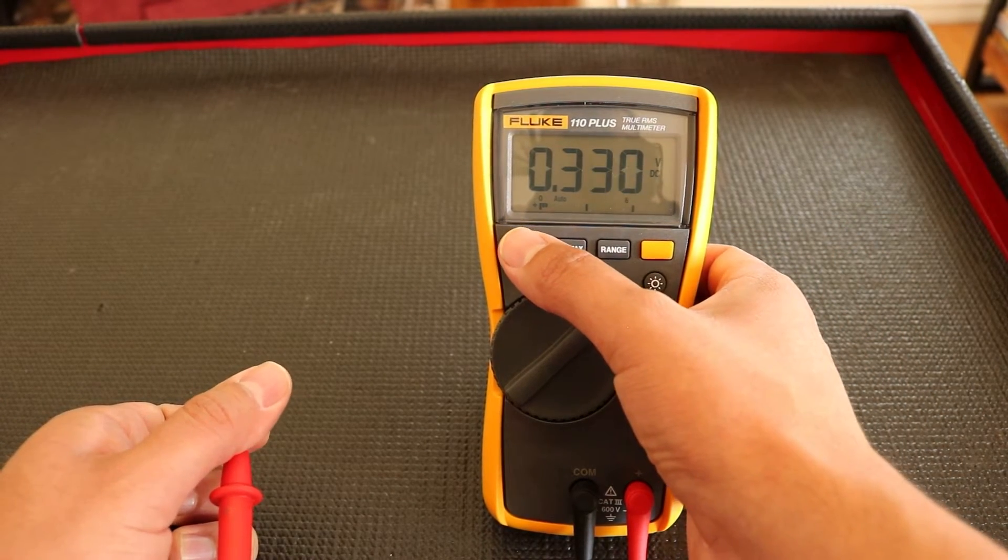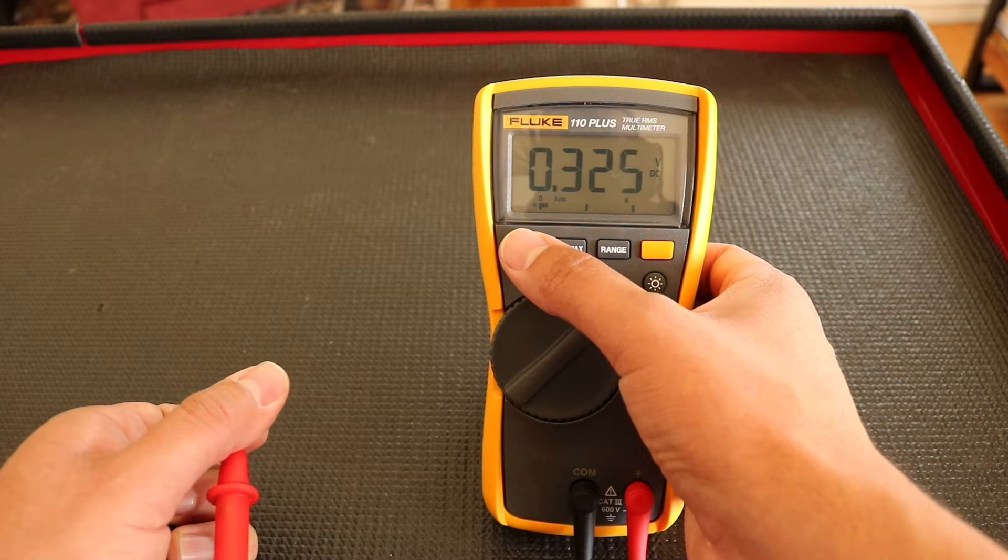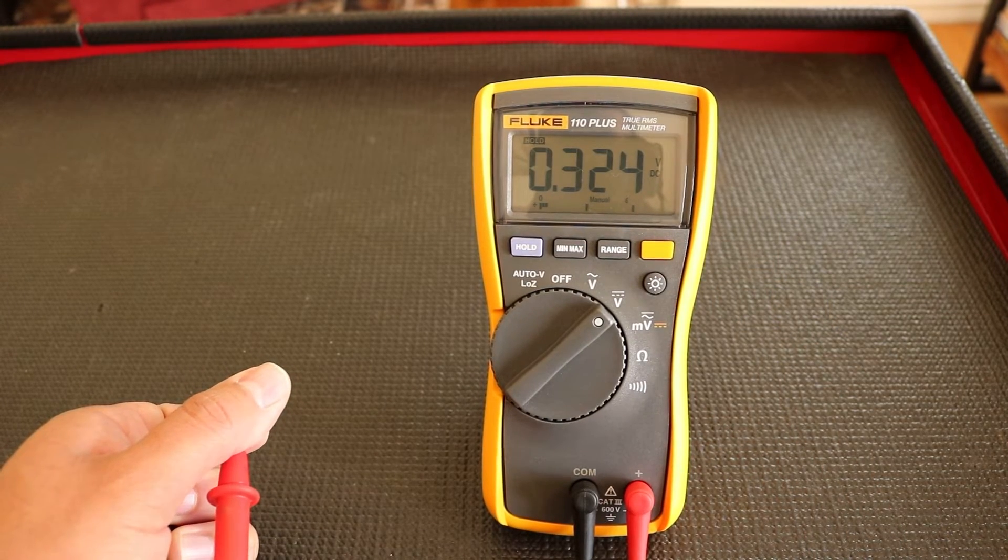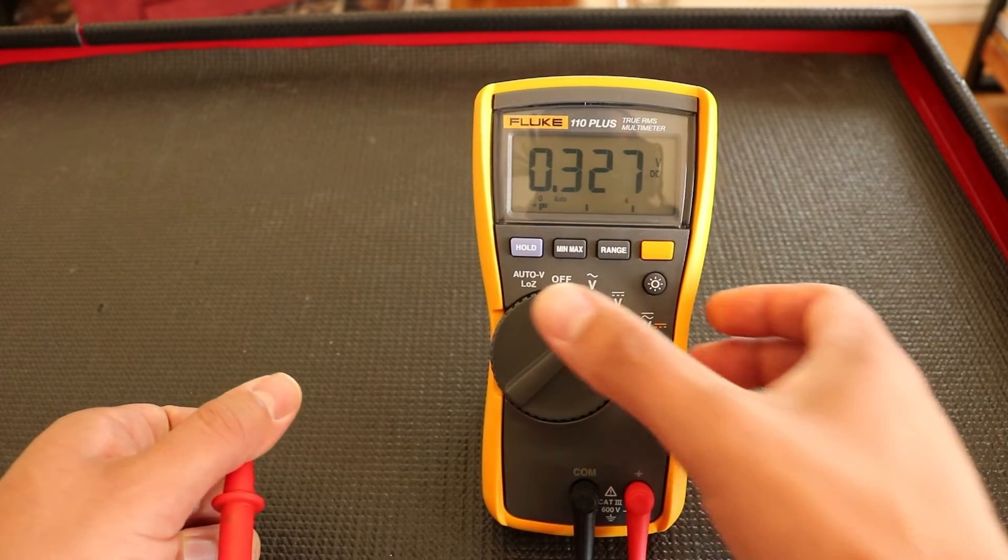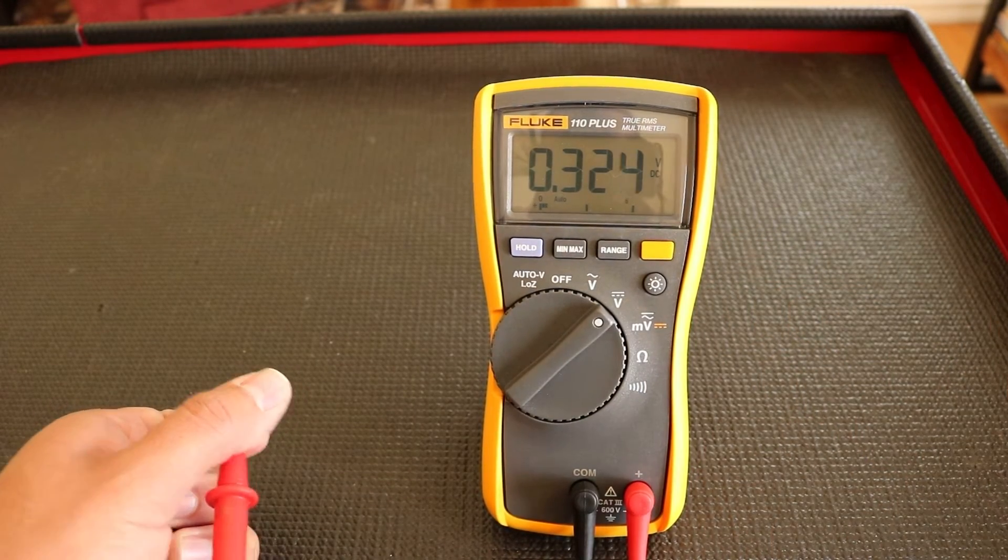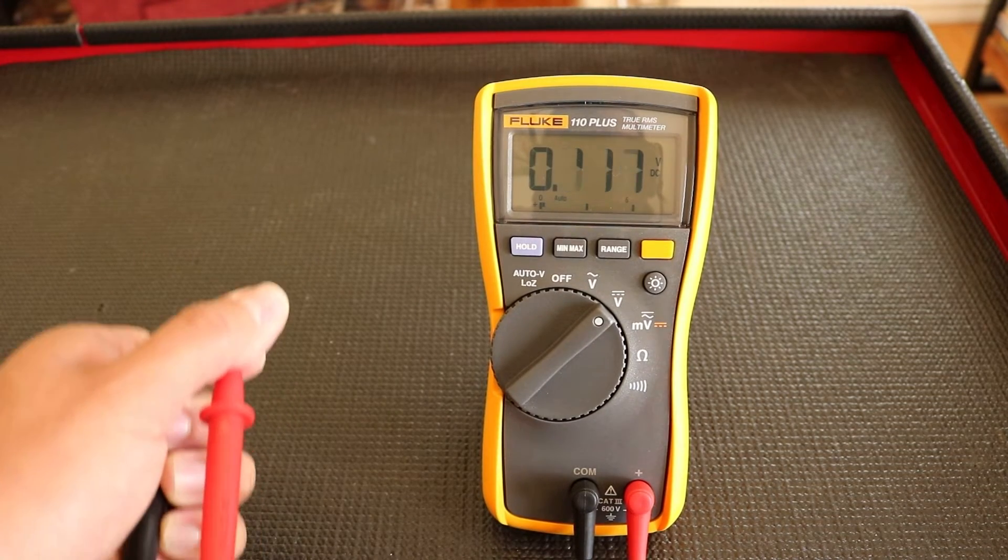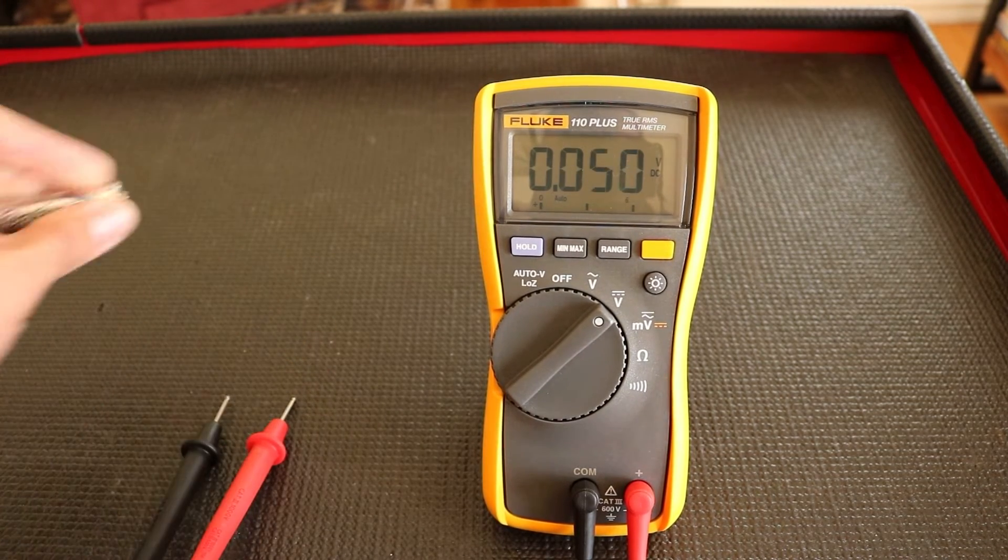So as you can see, it's moving, and when I press the hold button, it's going to hold that measurement. And it held it. If you want to unfreeze it, you press hold, and it goes back to a variable or erratic reading depending on what you're testing.